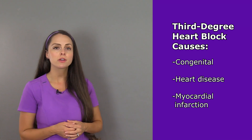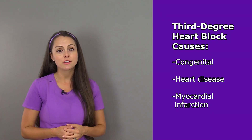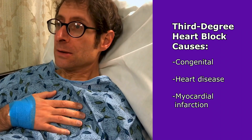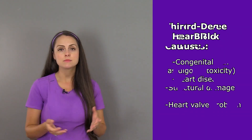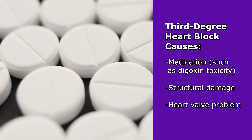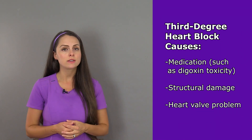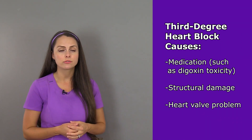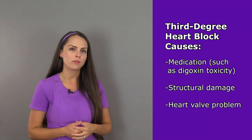What could cause this type of heart block? The person could be born with it — so it could be congenital — or the person has severe heart disease, a myocardial infarction, or they're taking a medication they became toxic on like digoxin, or they have structural damage to the heart affecting the electrical conduction system, or there is a heart valve problem.